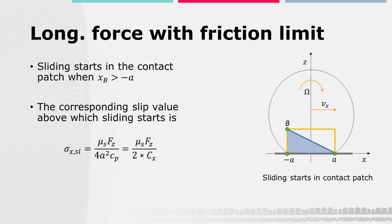The first elements in the contact patch start to slide when xB is greater than minus A — meaning point B is to the right of position minus A in the longitudinal direction. The position of xB depends on the slip value, so a corresponding sliding slip sigma_xSL can be calculated. It describes the value just before sliding starts. For all slip values higher than sigma_xSL, there is an area in the contact patch where brush elements are sliding.